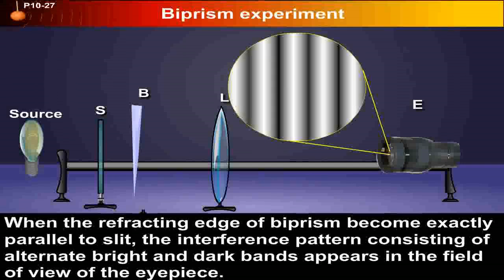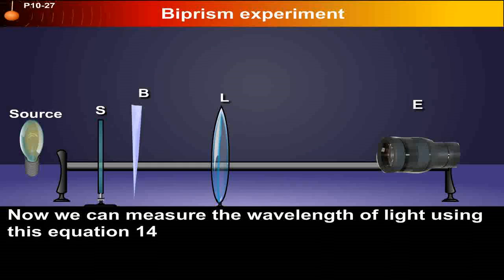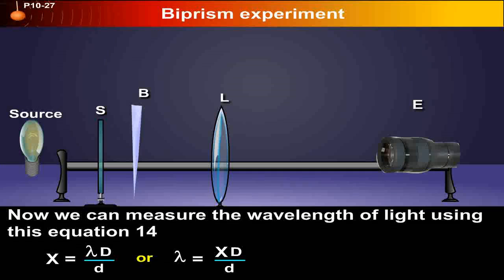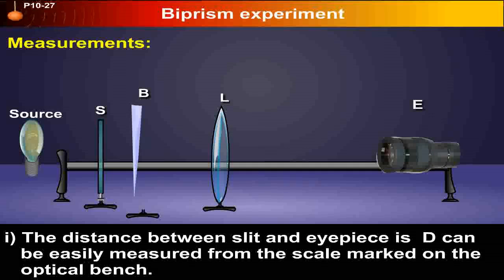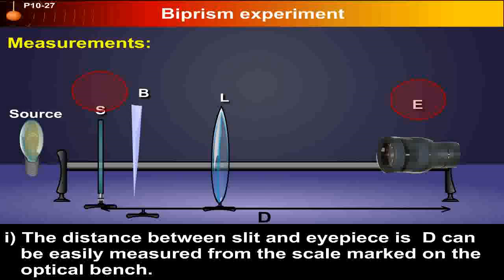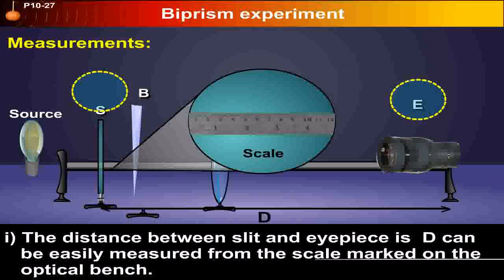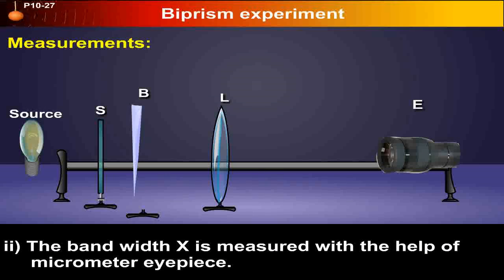Now we can measure the wavelength of light using this equation: x equals lambda d upon small d, or lambda equals x into small d upon d. The measurements: one, the distance between slit and eyepiece d can be easily measured from the scale marked on the optical bench.